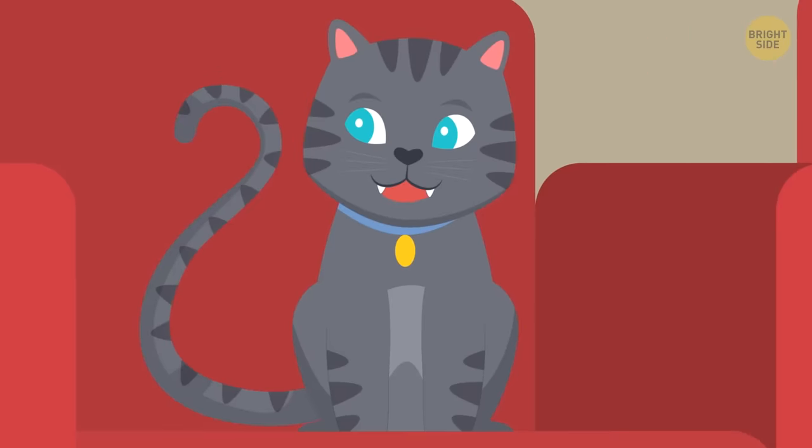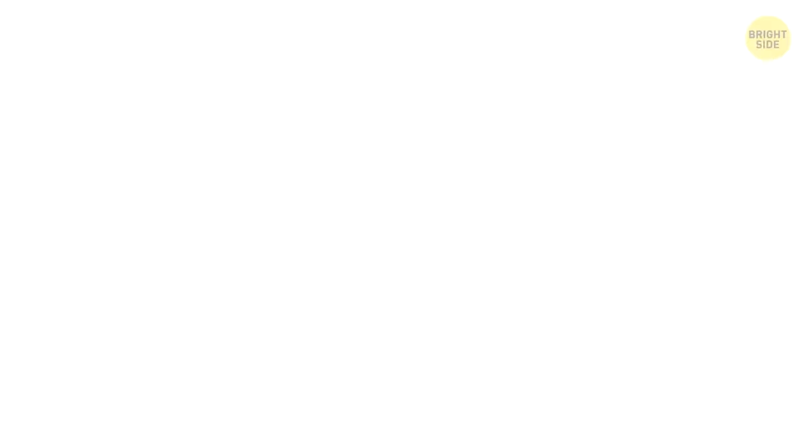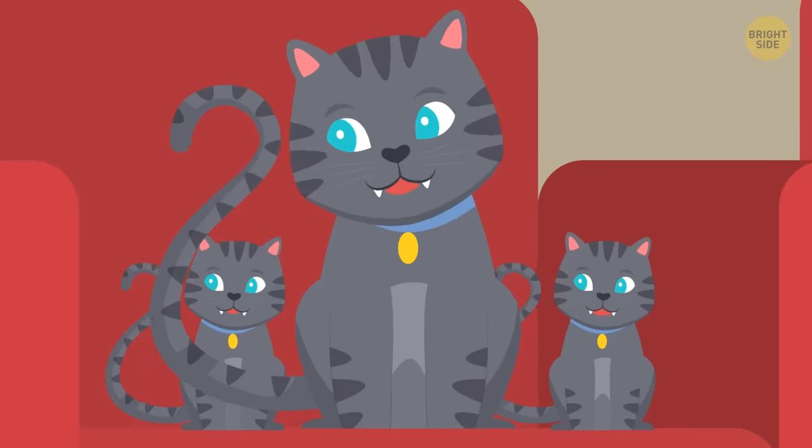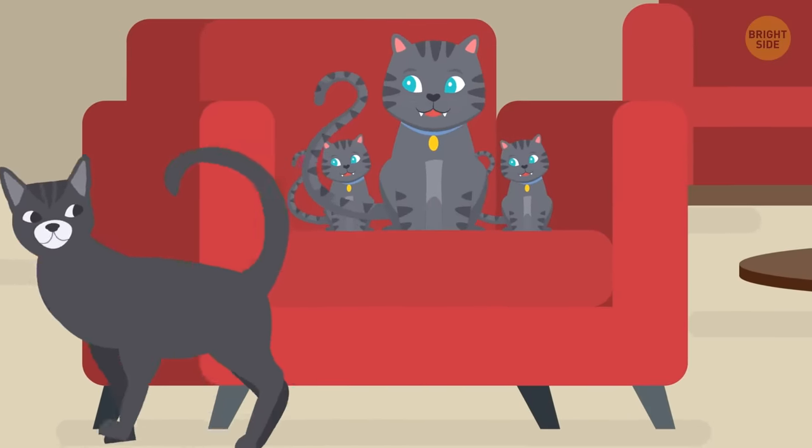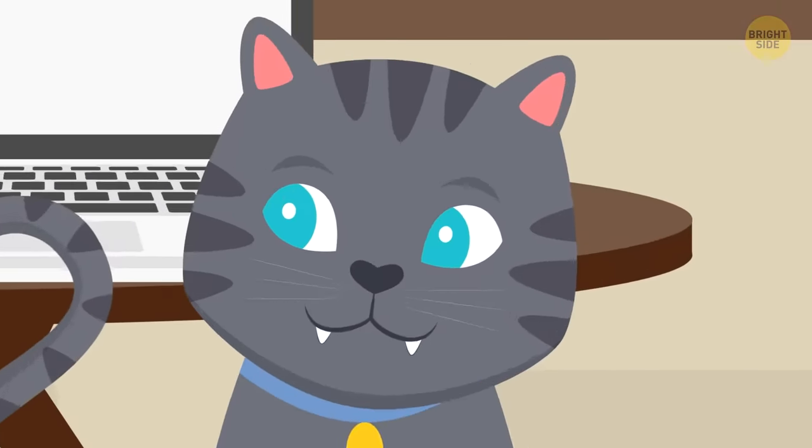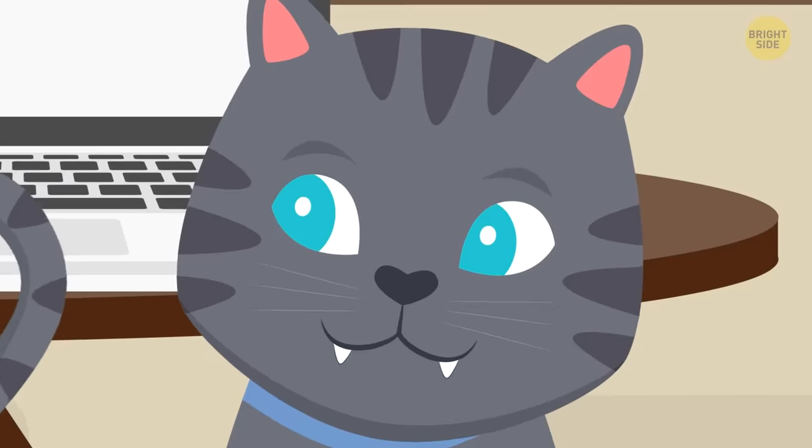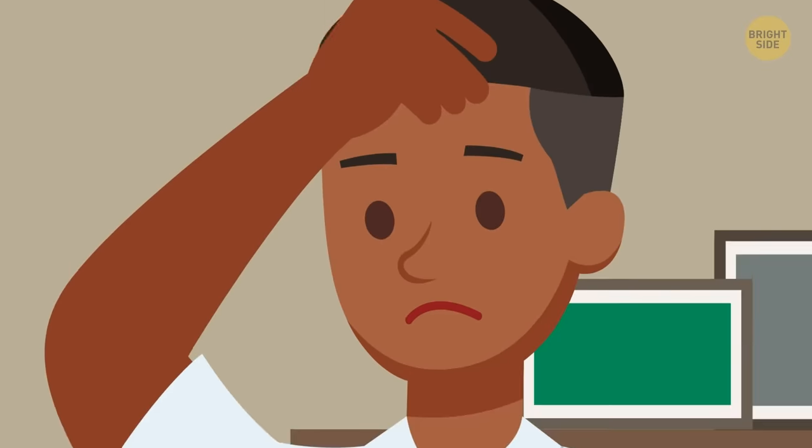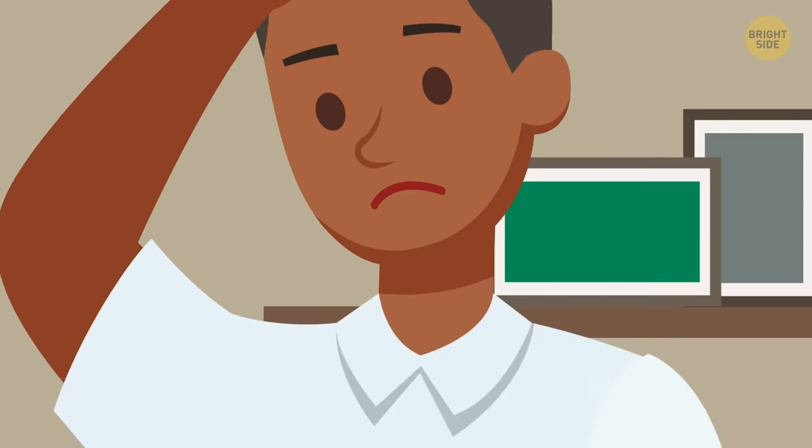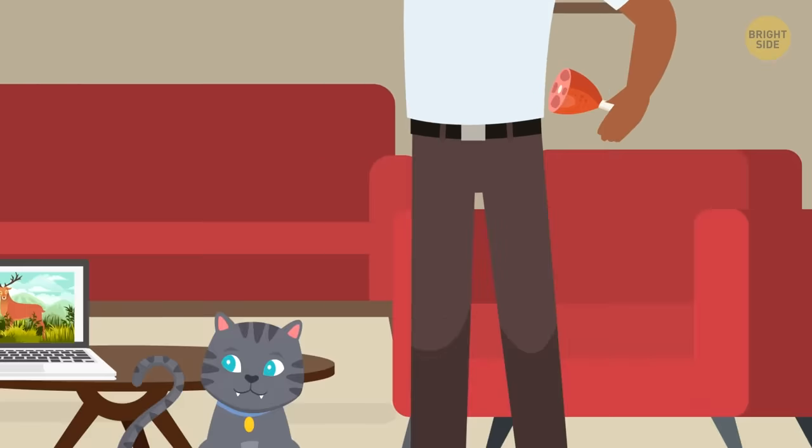Adult cats only meow to communicate with us humans. Kittens can meow at their moms, but grown cats don't interact with each other this way. Scientists have even found that these animals are great manipulators when it comes to cat-human dialogue. Cats can change the pitch of their meows so that they sound more like crying babies. They've long figured out that this way, they get more food and attention.